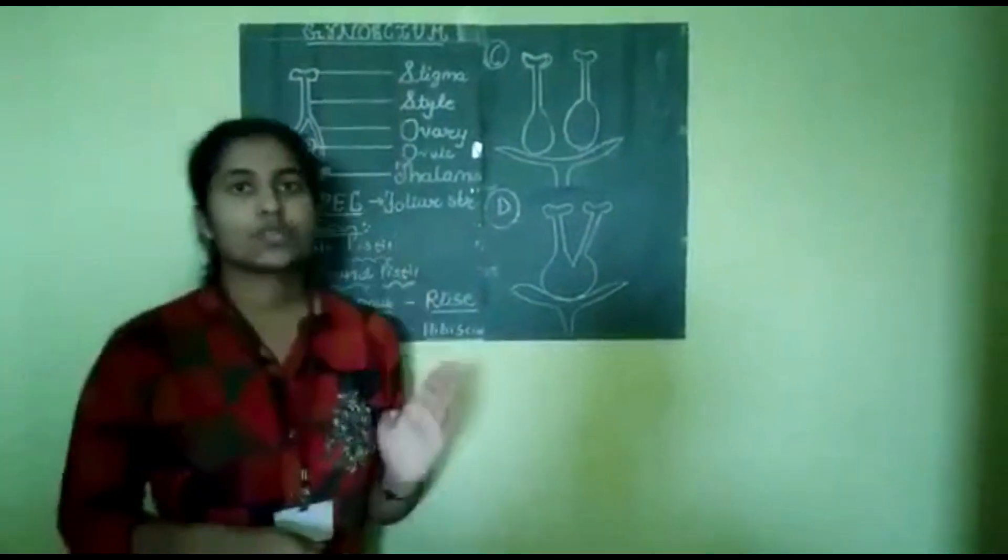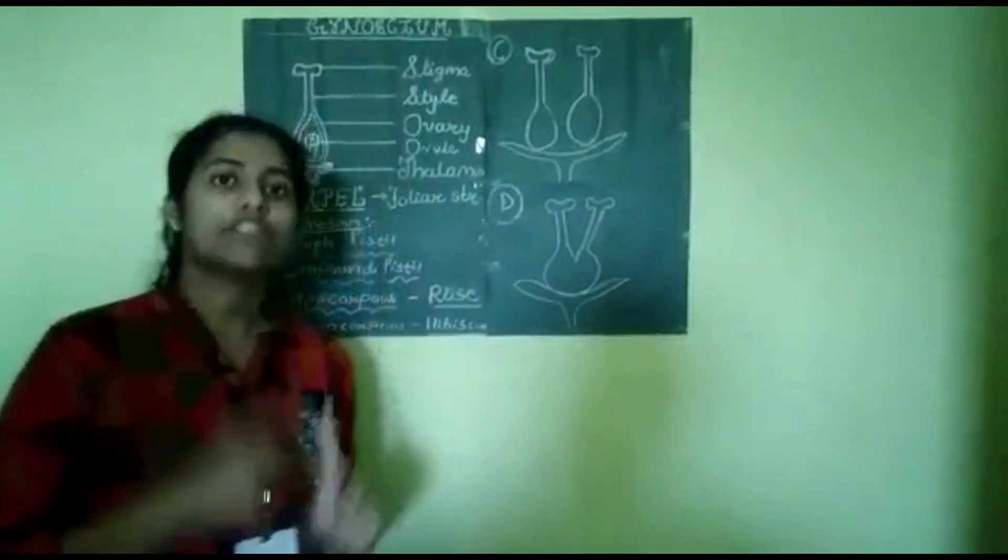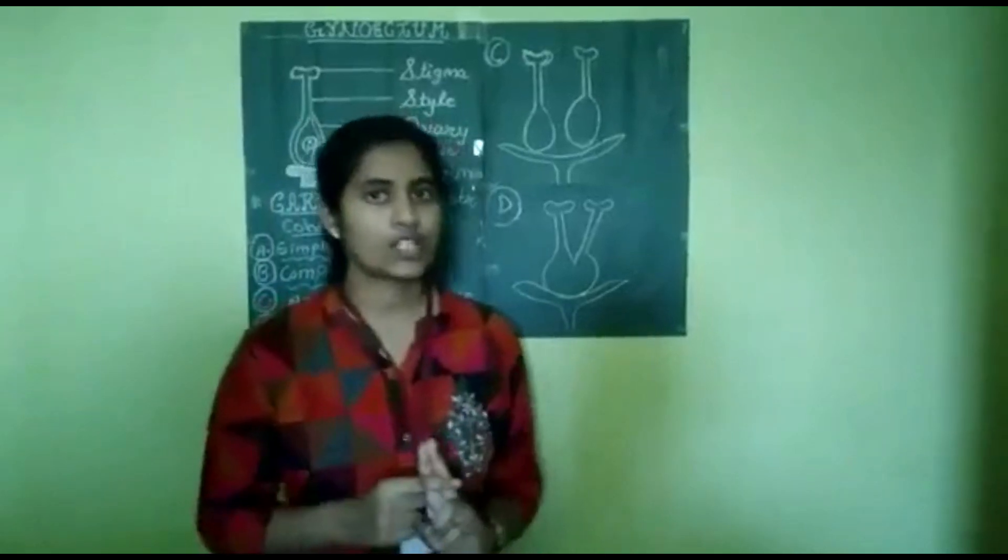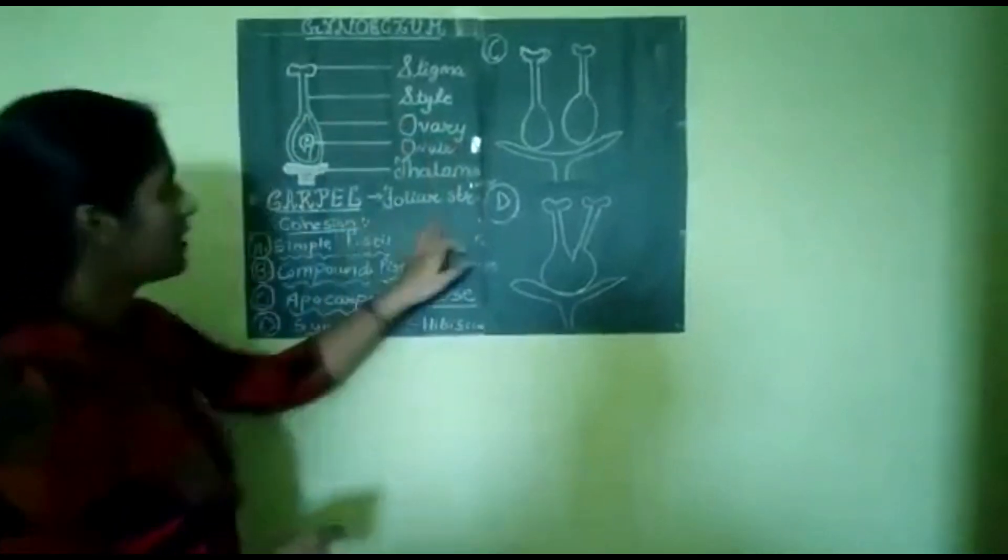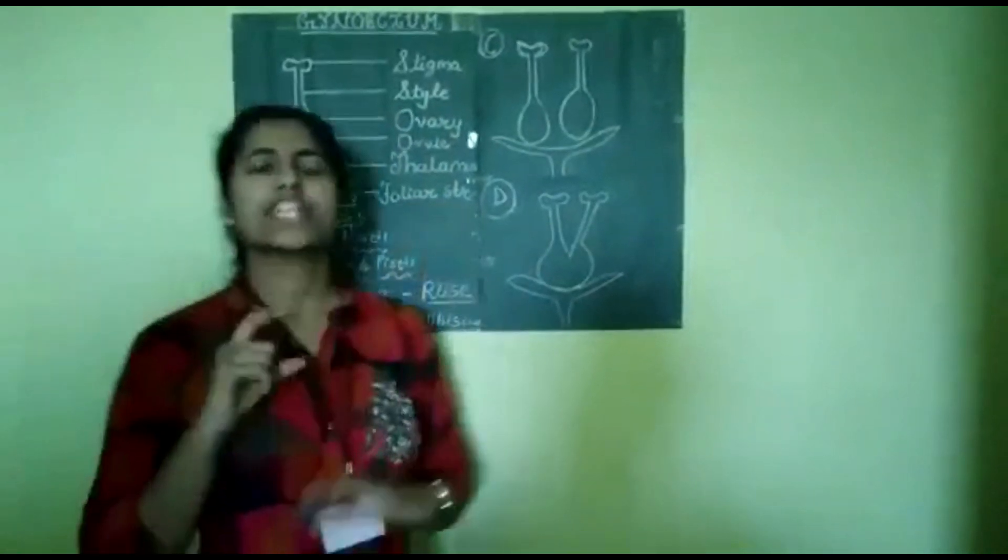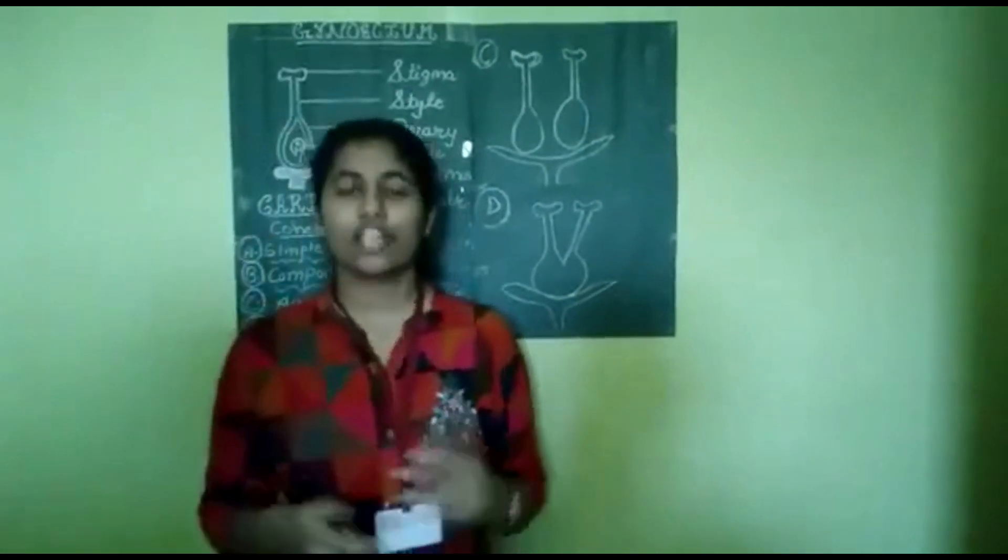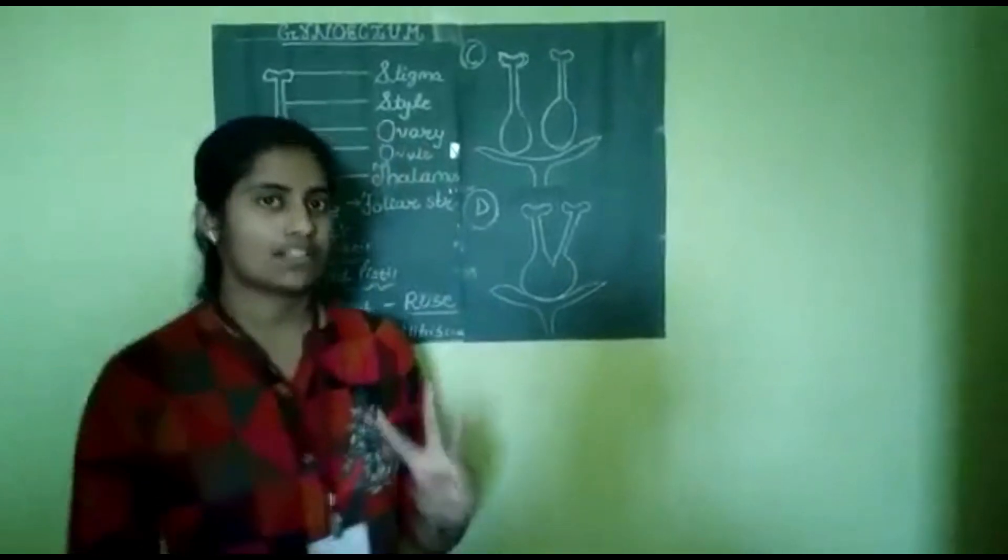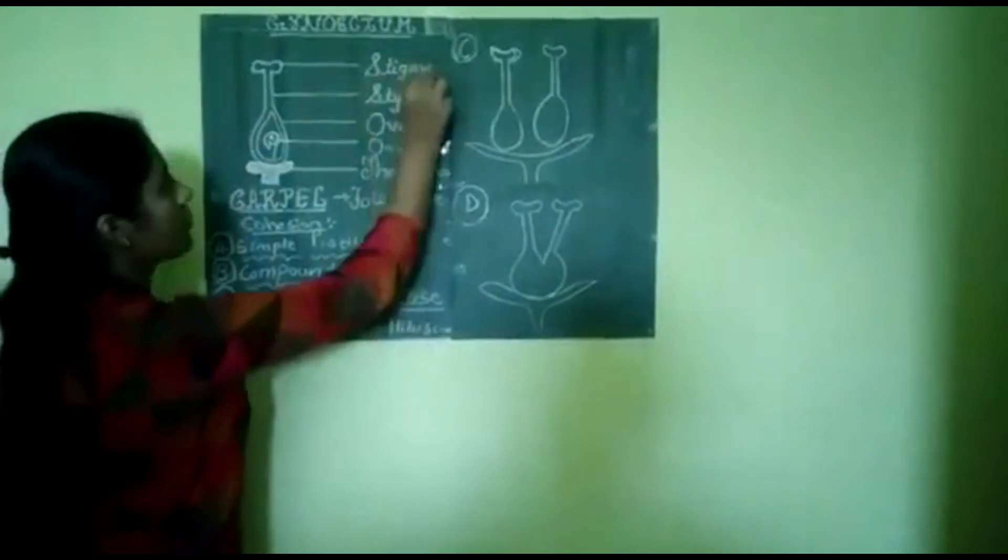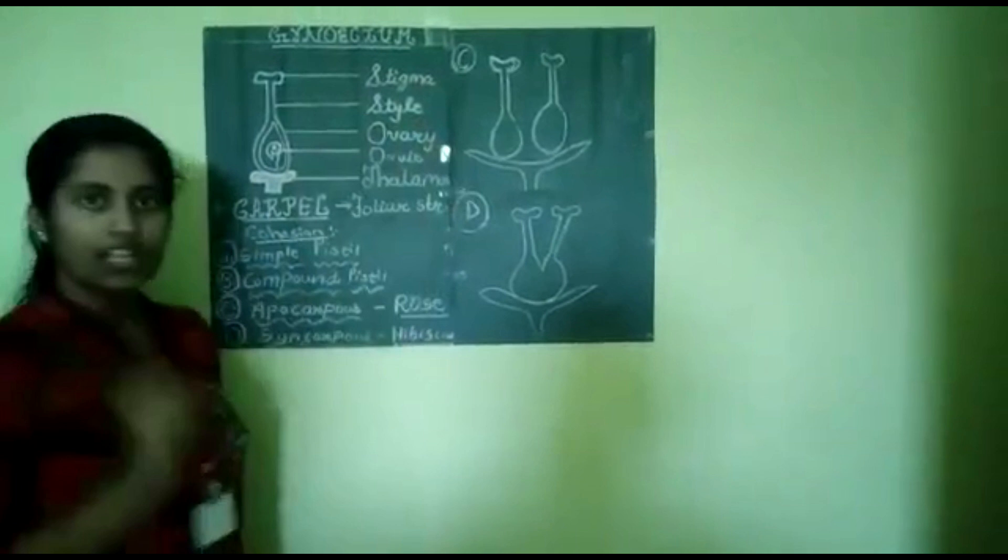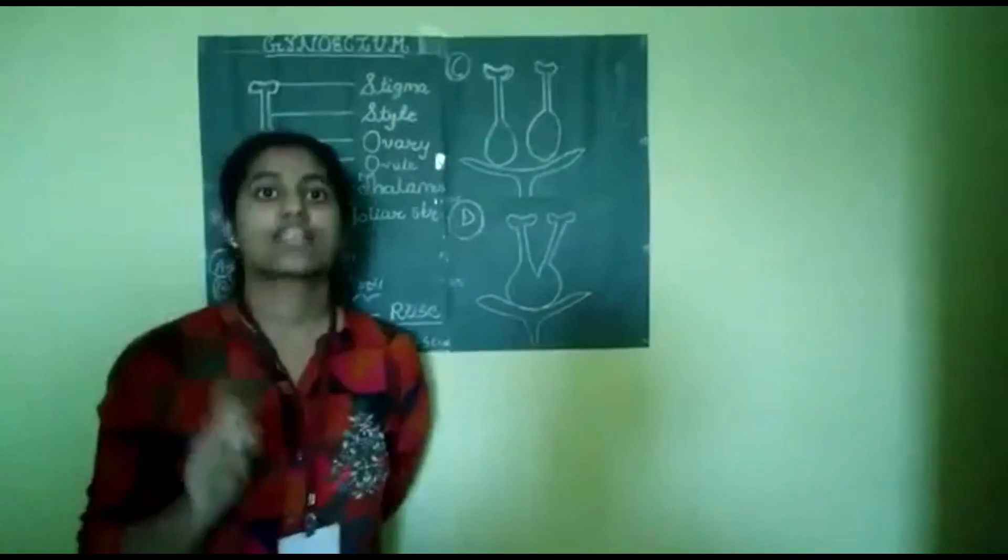Actually, Gynoecium is also called as Pistil. Its individual member or the individual unit is called as Carpel. Carpel is sometimes interpreted as the foliar structure or modified leaf which consists of three different parts. The parts are: Stigma, Style, and Ovary. These three parts comprise Carpel.